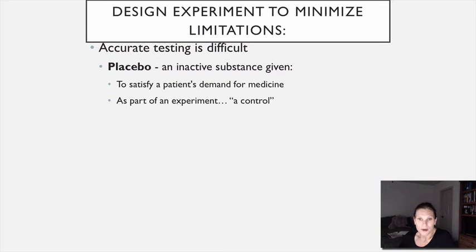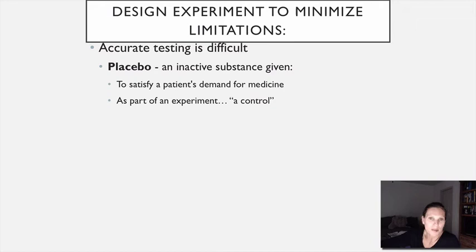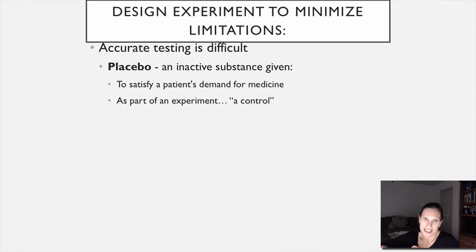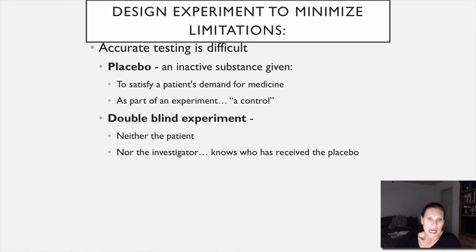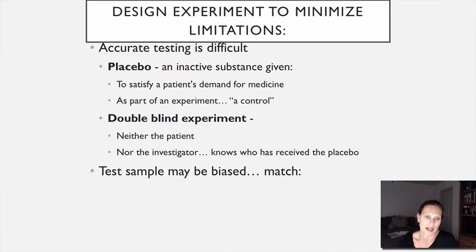Depending on your research source, the placebo effect generally comes in at about 35% — meaning 35% of people given a placebo will feel better. That's significant. If you're designing a study and half your group is getting a placebo, but 35% of those people are going to feel something based solely on the placebo, it really makes data analysis challenging. That really throws a wrench into things, especially in a double-blinded situation where nobody knows who has what.